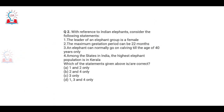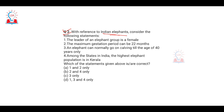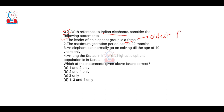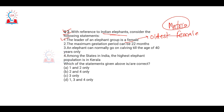Moving to the next question: with reference to the Indian elephant, consider the following statements. This is a general question — if you have some curiosity about wildlife, it may be easy to answer. First statement: the leader of an elephant group is a female — correct. The leader is the oldest female, who leads the group in search of food and water. Elephants have matriarchal societies.